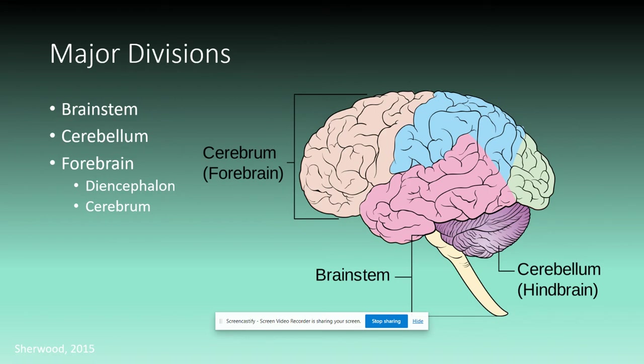The brain can be broken into three major parts, starting from the most inferior. We have the brainstem, and moving up we have the cerebellum and the forebrain. The brainstem is the support structure and the first point of contact with the peripheral nervous system, connected to the spinal cord. The cerebellum sits behind the brainstem and is important for motor control. The forebrain, which makes up most of our brain, is where higher functions like emotions and problem solving occur.